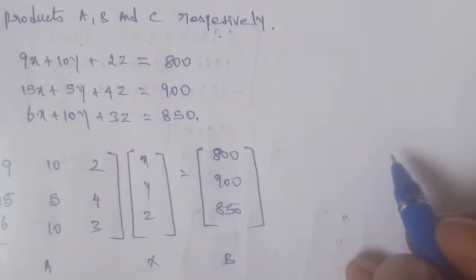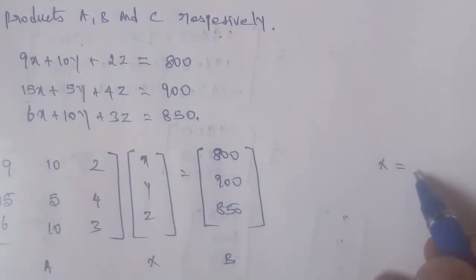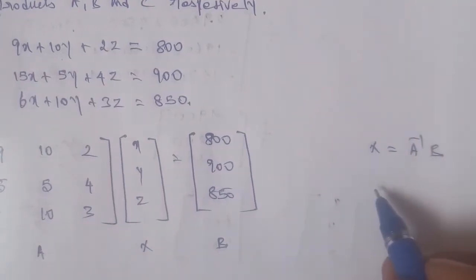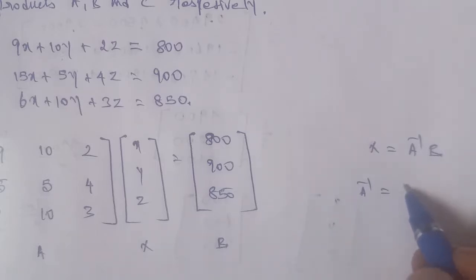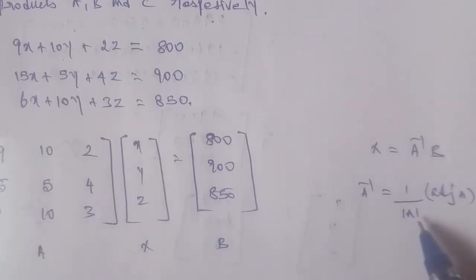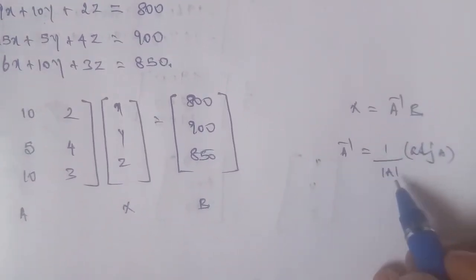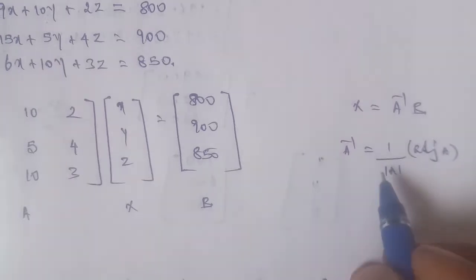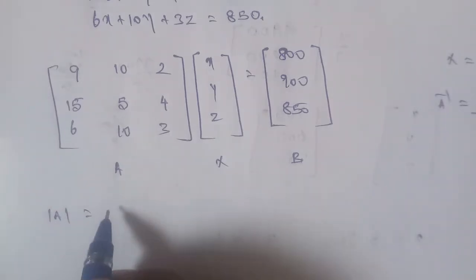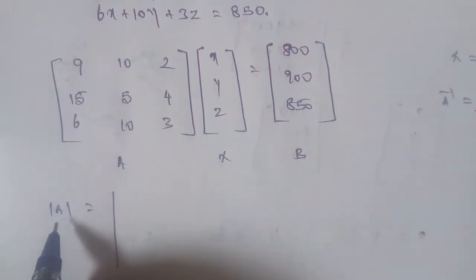For the matrix inverse method, we use the formula x equals A inverse into B. The A inverse formula is 1 divided by the determinant of A, multiplied by the adjoint of A. First, we find the determinant of A.